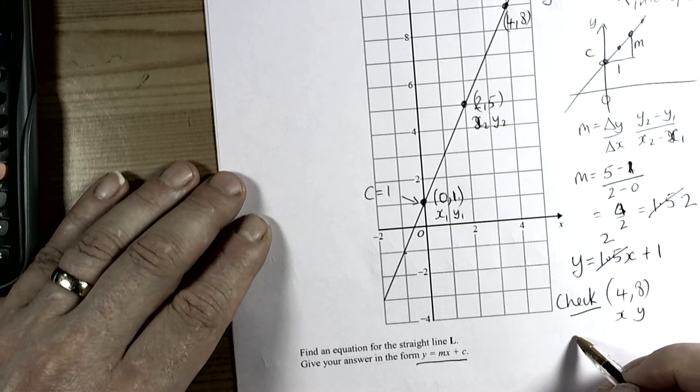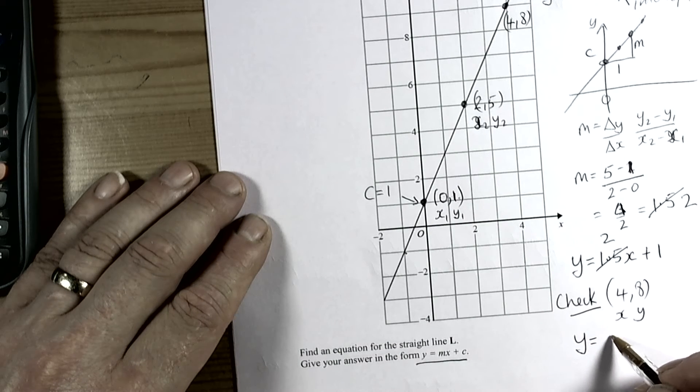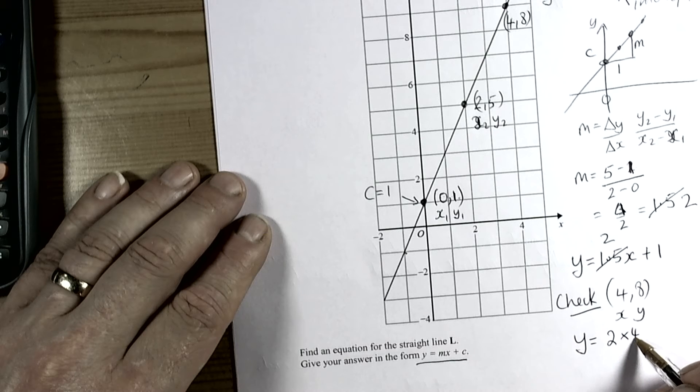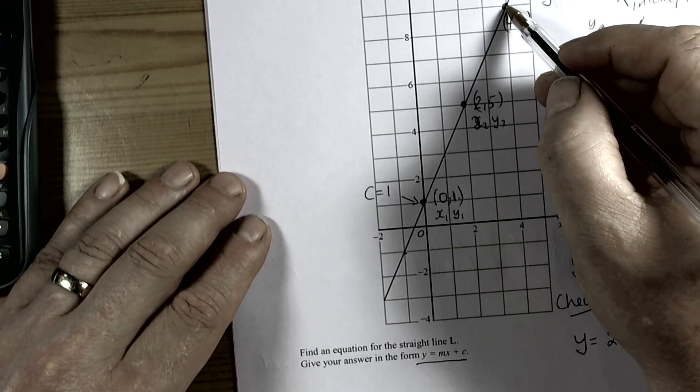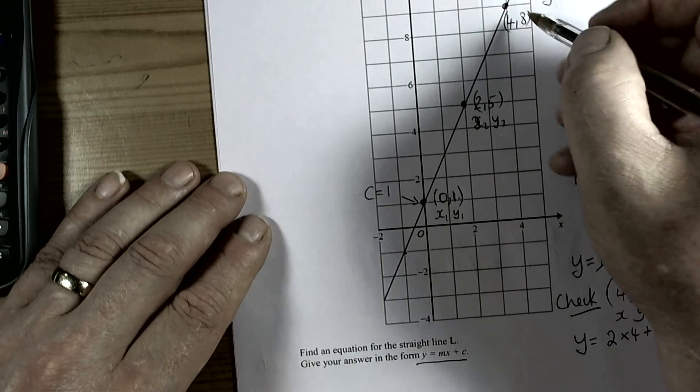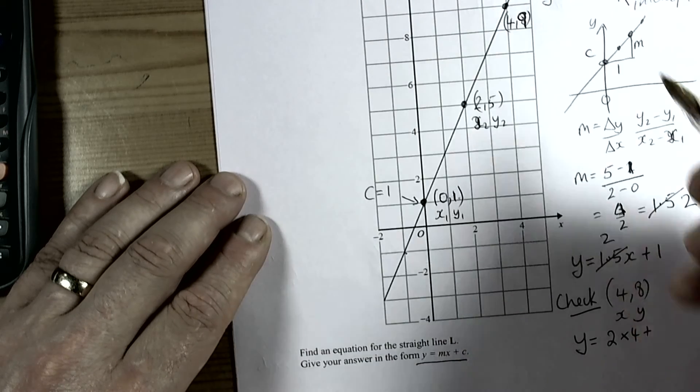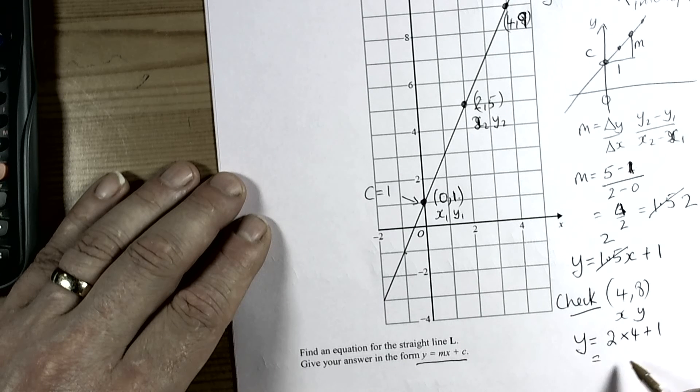Now if I check, I can see that the y value is 2 times 4 plus 1. I check my coordinate here is (4, 9), and this will be 4, 9, so 2 times 4 is 8 plus 1 is 9.